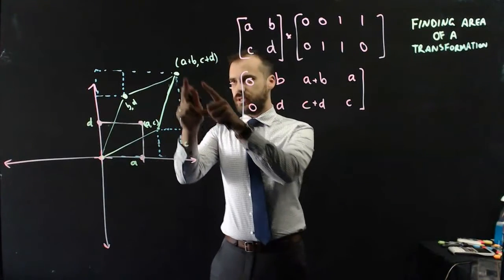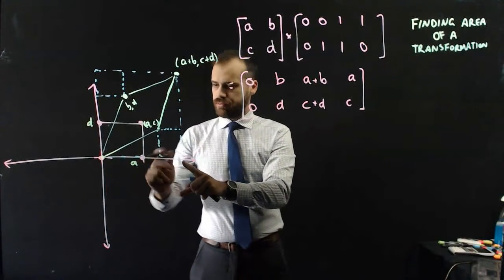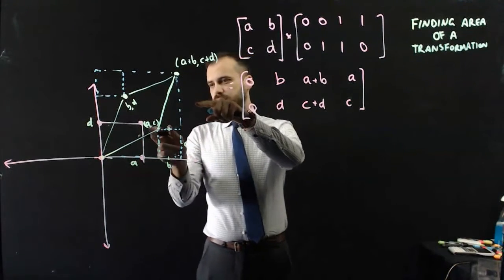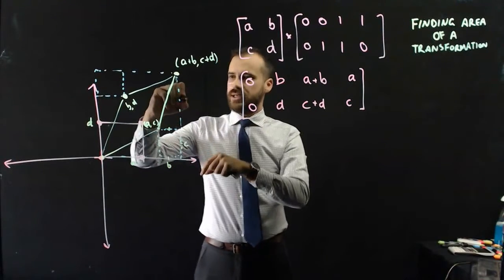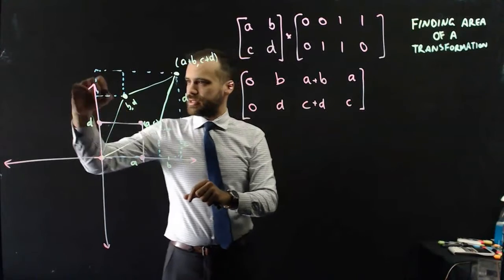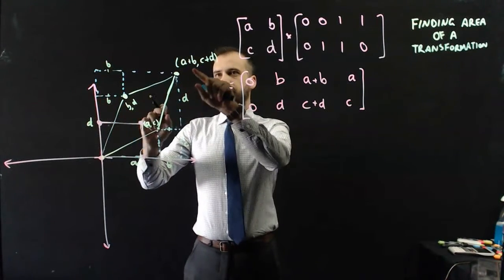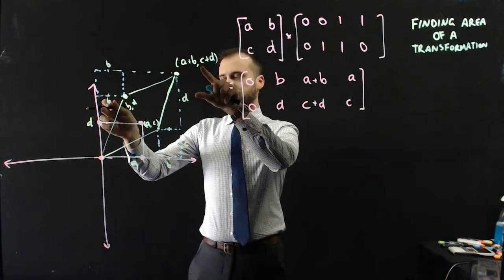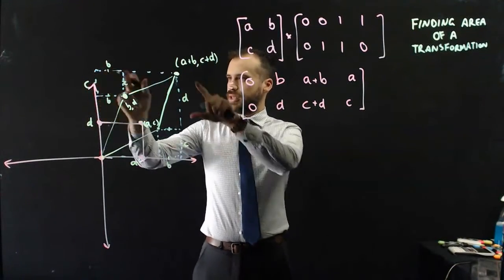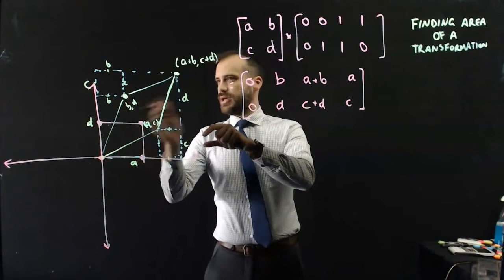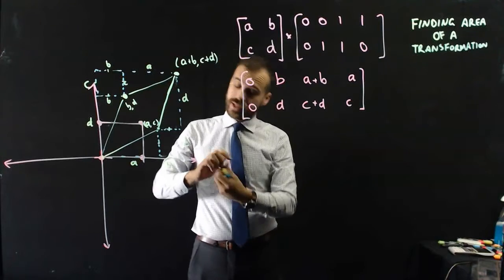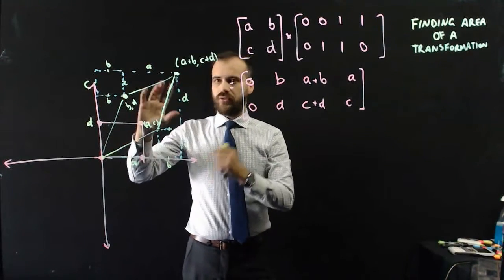Now this point here is interesting because it's A plus B, so that's B there. Now let's look at this length here. This is C from there to there. This is C plus D, so that must be D. You can see that's where we're getting our congruent triangles from. So we've labeled up this entire thing in terms of A, B, C, and D.